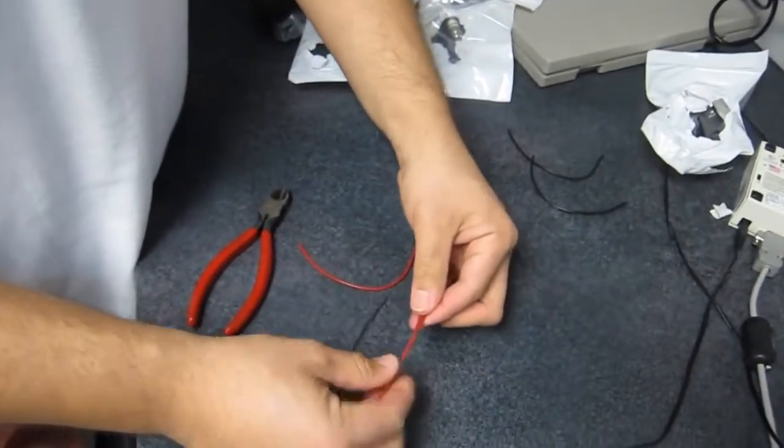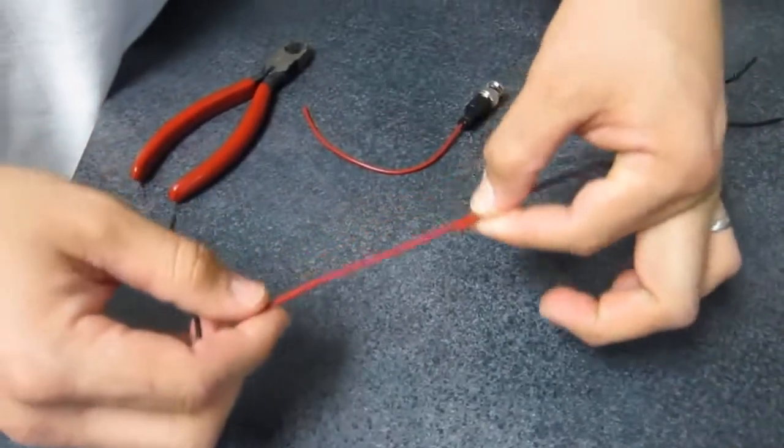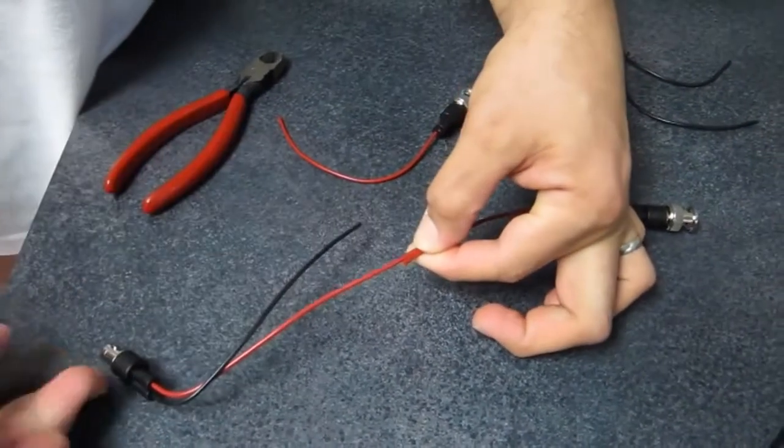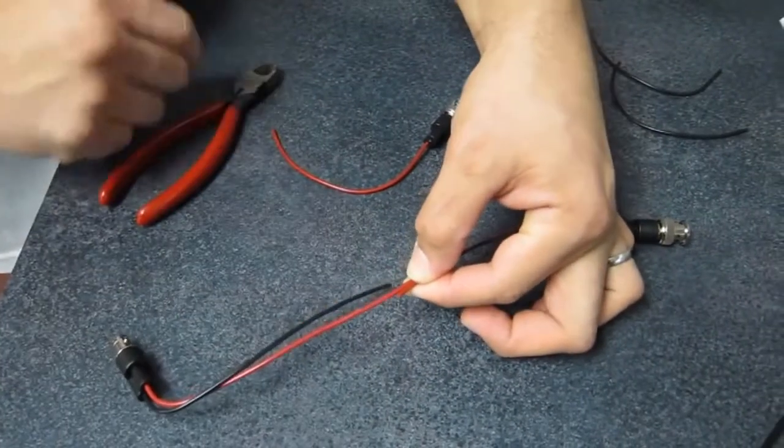What we'll do is splice these two red wires together, solder them, and heat shrink them so they don't pull apart.